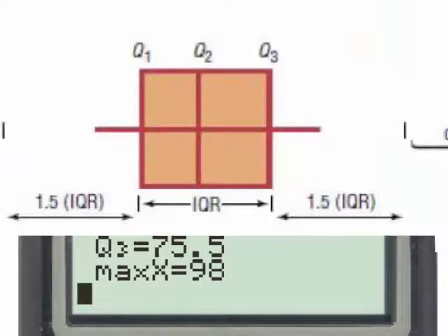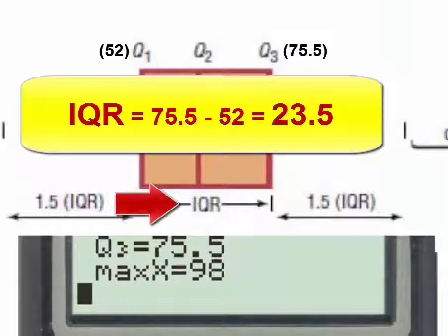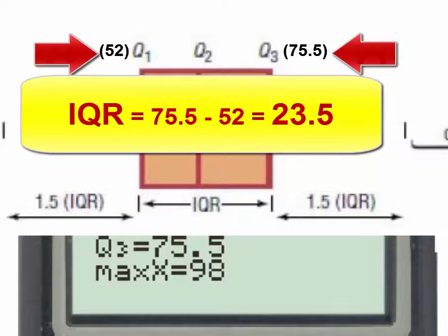To find the interquartile range, or the IQR, we would subtract Q3 minus Q1.